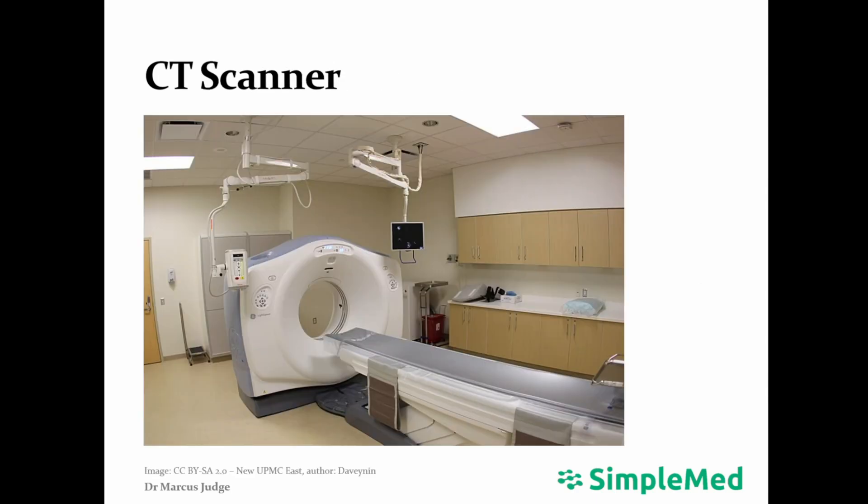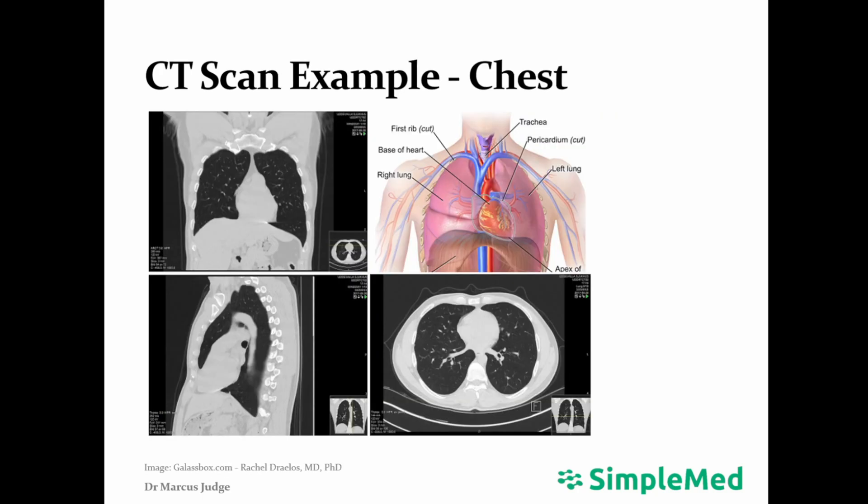This is an example of a CT scanner. As you can see, it looks like a donut in which the patient lies. A CT scan takes only a few minutes usually. This is an example of a CT chest. You can see the coronal, sagittal, and axial views.